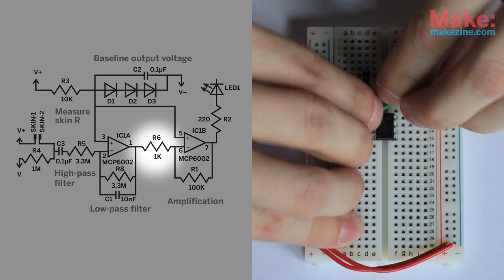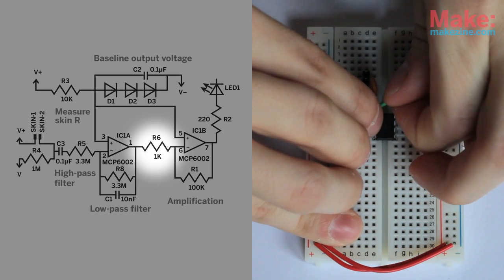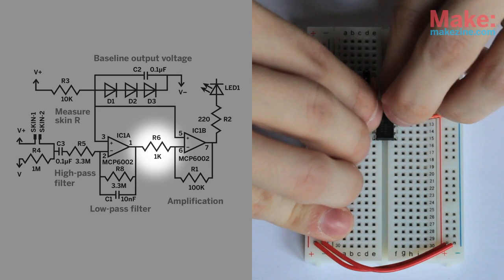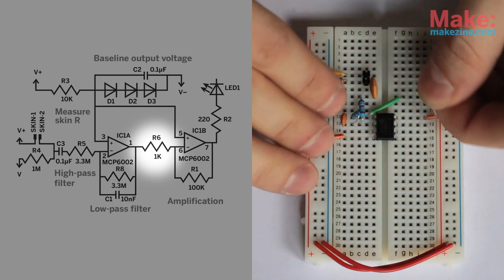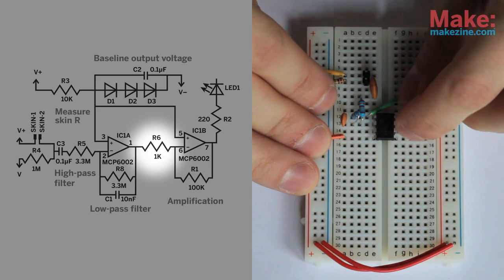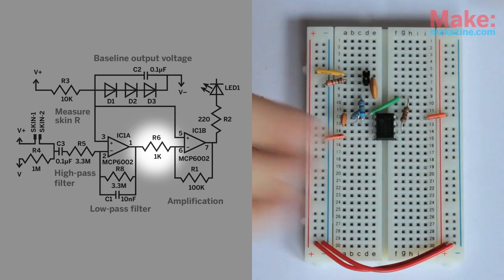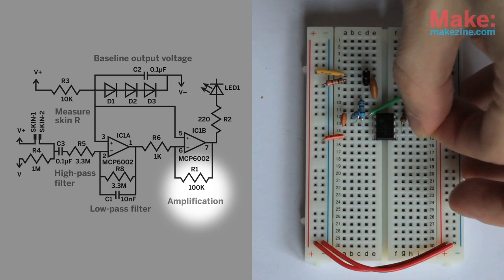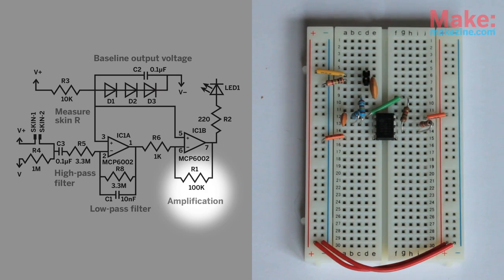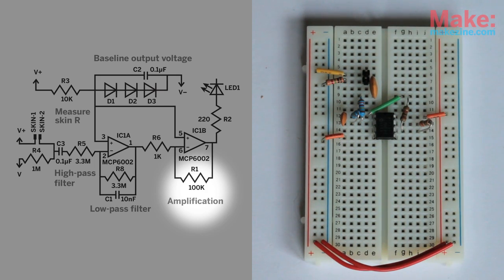I connected the output of the first op-amp to the negative input of the second op-amp using a 1K resistor. Then I added a 100K resistor between pins 6 and 7, which sets the op-amps amplification very high.